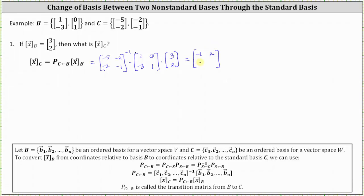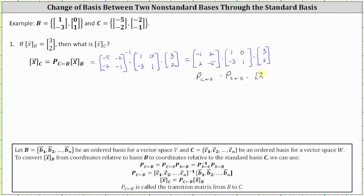This first matrix is the transition matrix from S to C, and the second matrix is the transition matrix from B to S. The last matrix contains the coordinates of vector X relative to basis B. The next step is to multiply the two 2×2 matrices.